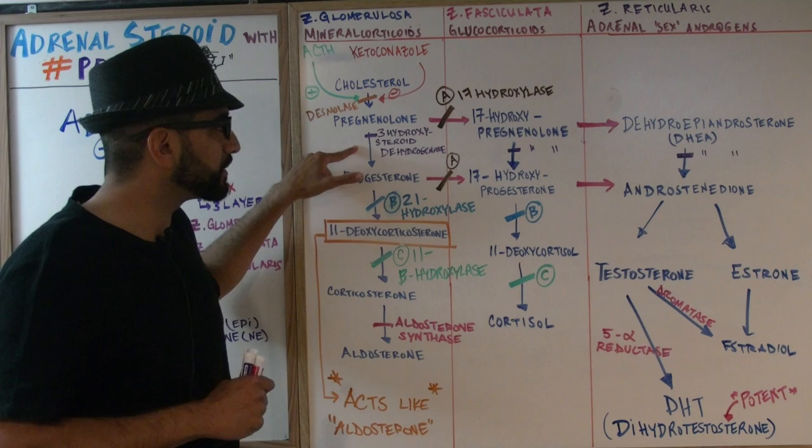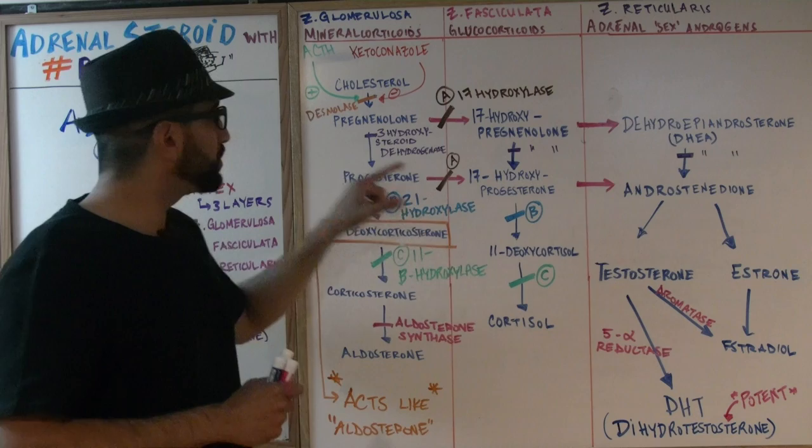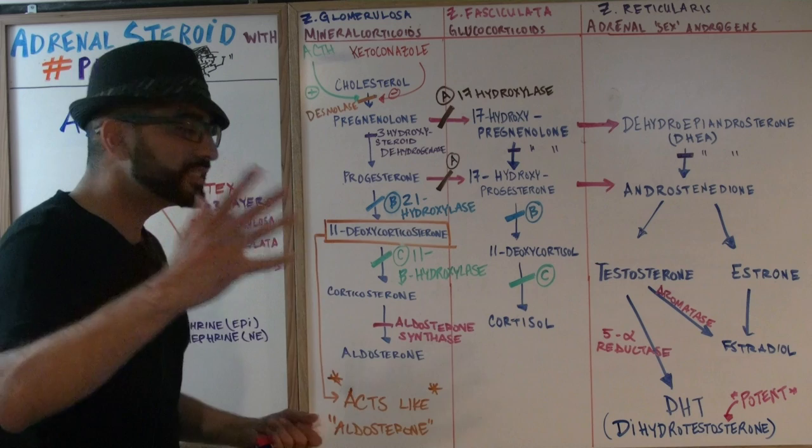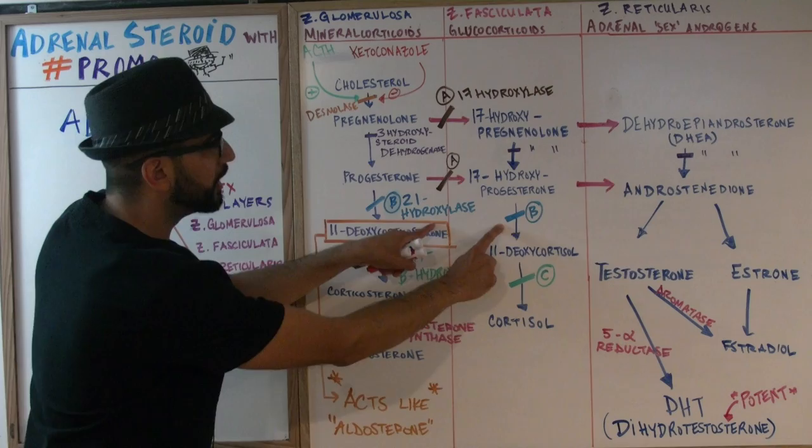From 17-hydroxyprogesterone, that converts into 11-deoxycortisol through 21-hydroxylase. And once we're at 11-deoxycortisol, we convert into cortisol by 11-beta-hydroxylase. So we have 11-beta-hydroxylase working here, 21-hydroxylase working here, and 17-hydroxylase is the enzyme which converts pregnenolone horizontally across columns.